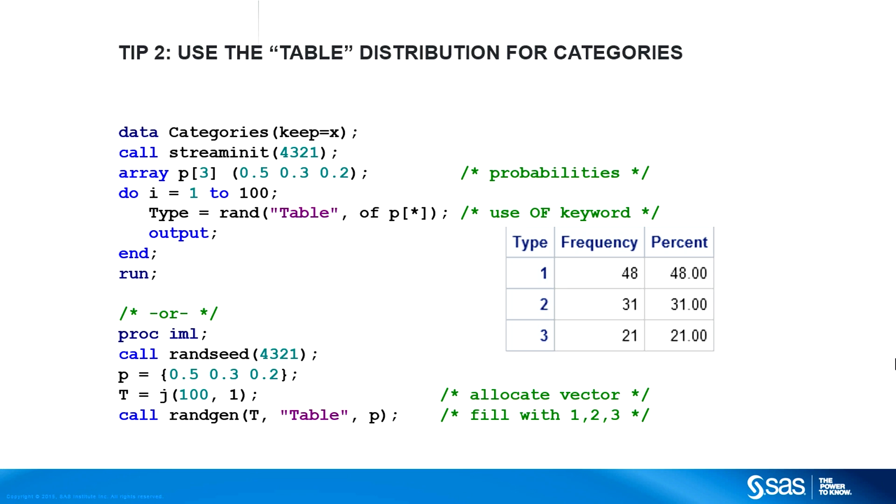Tip number two: use the table distribution for simulating categorical variables. The table distribution enables you to specify the probability of choosing each of k categories. In the data step, you can put the probabilities into an array and use the of keyword to specify the probabilities. The RAND function returns an integer in the range 1 through k. The SAS IML version is similar, except that the probabilities are specified by using a vector.